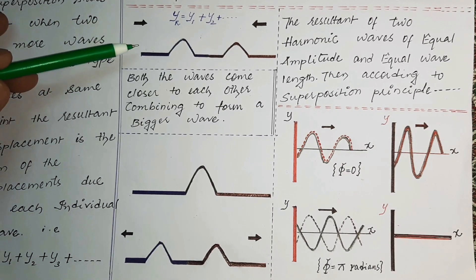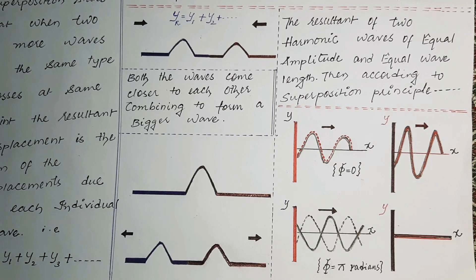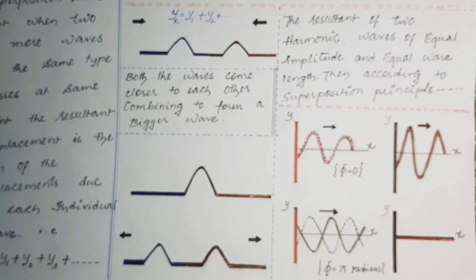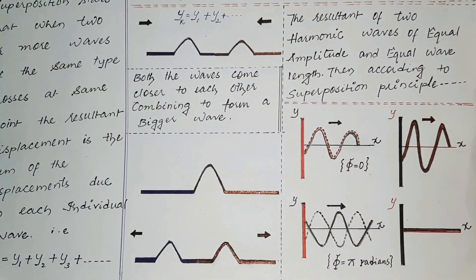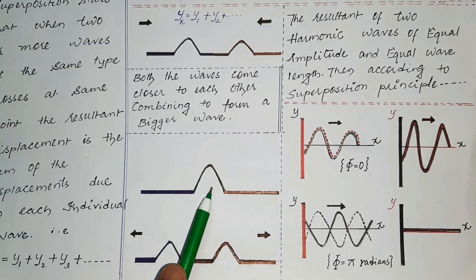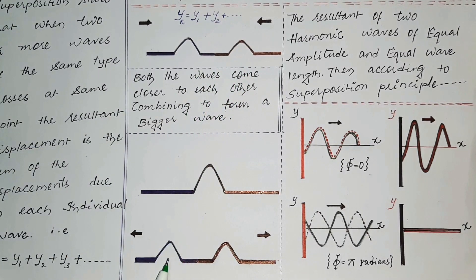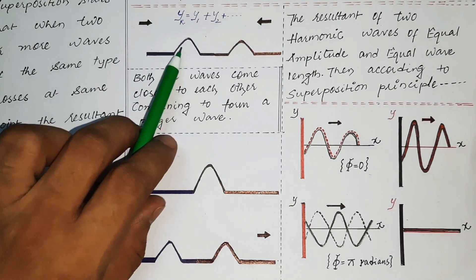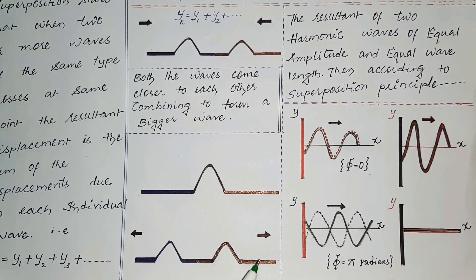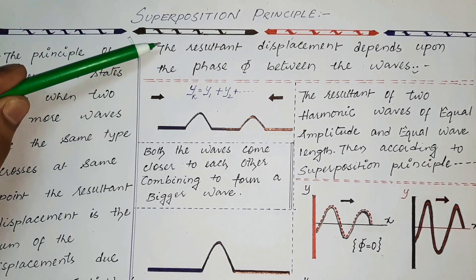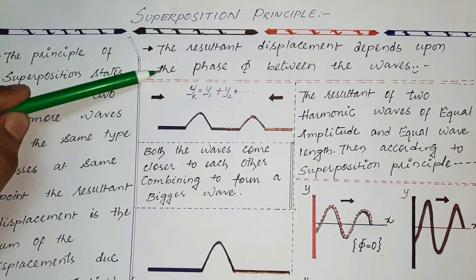As you can see clearly from the diagram, two waves are travelling in opposite directions and crossing at the same point. At the point of crossing, the displacement is yr, the resultant due to both waves — that is yr = y1 + y2. After crossing the common point, they continue to travel in their original directions. One more important point about the superposition principle is that the resultant displacement depends upon the phase difference between the two waves.